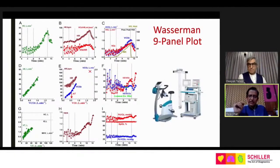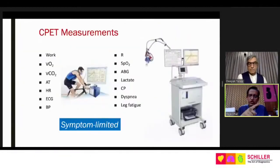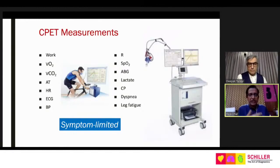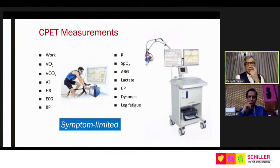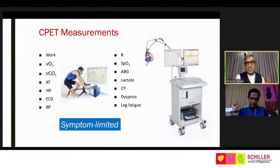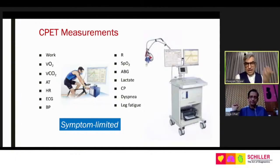Dr. Adhar interjects to ask: for someone starting out with CPET, what are the basic minimum parameters to focus on? Dr. Talwar responds: when asking whether a patient has exercise limitation, exercise capacity is directly related to VO2. So VO2 peak is the first parameter — you need to achieve more than 83–85% of predicted. If achieved, it is likely there is no significant cause of dyspnea from the respiratory, cardiac, circulatory, or muscular systems. The second key parameter is the anaerobic threshold — where exercise shifts from aerobic to anaerobic metabolism.